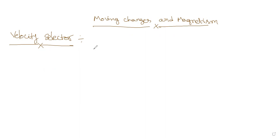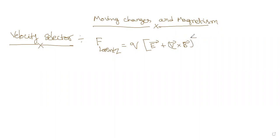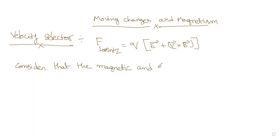So what is this velocity selector? The net Lorentz force — the first component is because of the electric field, and the next one is because of the magnetic field, that is V cross B. That is how we get the total force. Consider that the magnetic and electric fields are perpendicular to each other.